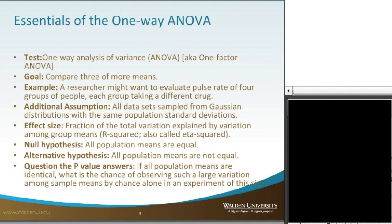When we consider the p-value, or the SIG as SPSS outputs it, the question the p-value answers is: if all population means are identical, what is the chance of observing such a large variation among sample means by chance alone in an experiment of this size? This wording translates back to what is essentially the false positive rate for an experiment of this size.